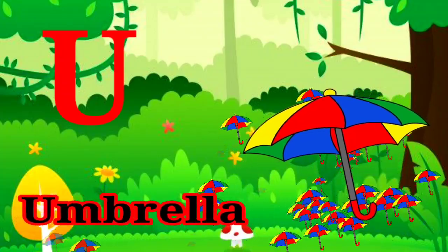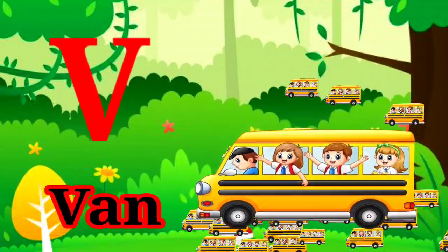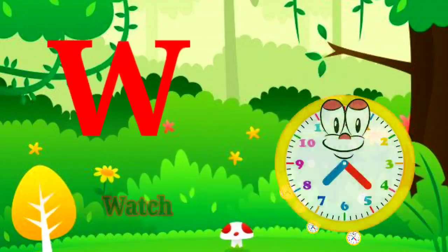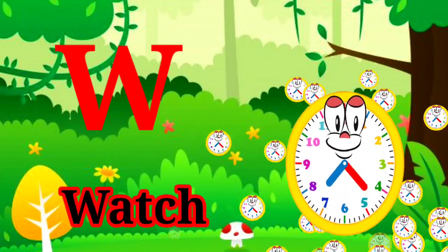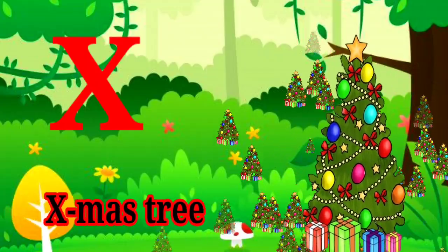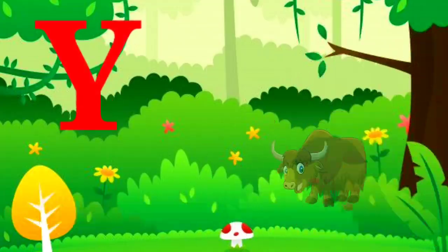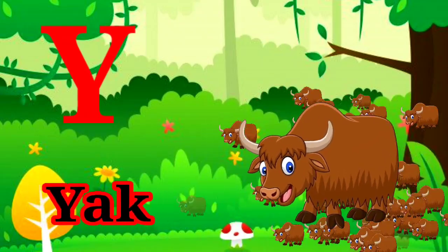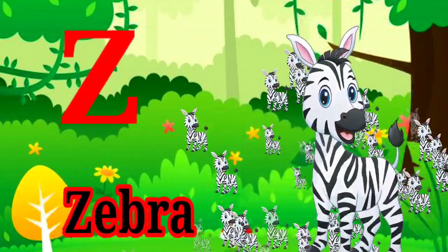U for Umbrella. V for Rain. W, W for Watch. X, X for X. Y, Y for Yak. Z, Z for Zebra.